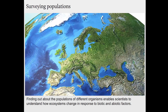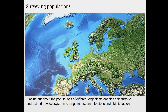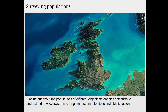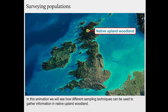Finding out about the populations of different organisms enables scientists to understand how ecosystems change in response to biotic and abiotic factors. In this animation, we will see how different sampling techniques can be used to gather information in native upland woodland.